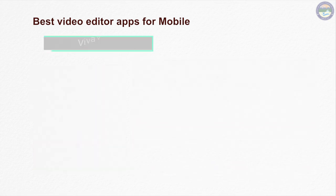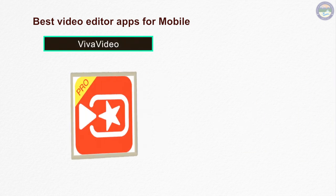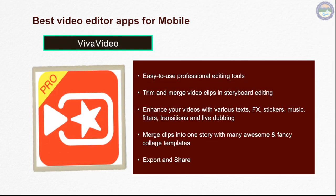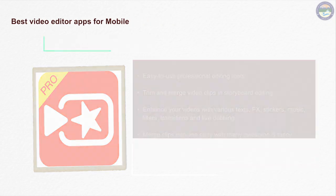Viva Video Android app एक बेहद powerful video editing app है जिससे आप अपने वीडियो को trim, crop और adjust कर सकते हैं। इसकी सबसे खास बात यह है कि इस app को use करने पर आपको 200 video filters और effects मिल जाते हैं जिनसे आप अपने वीडियो को amazing look दे सकते हैं।